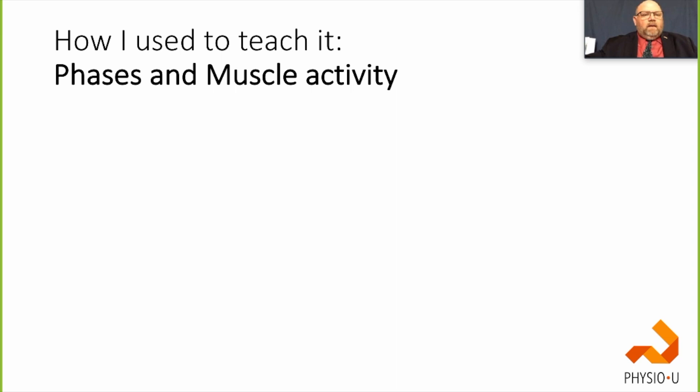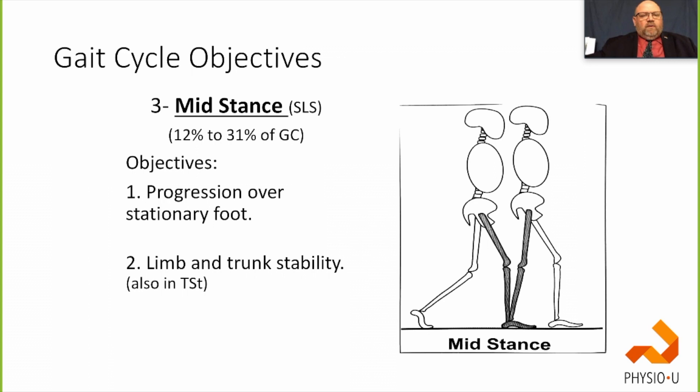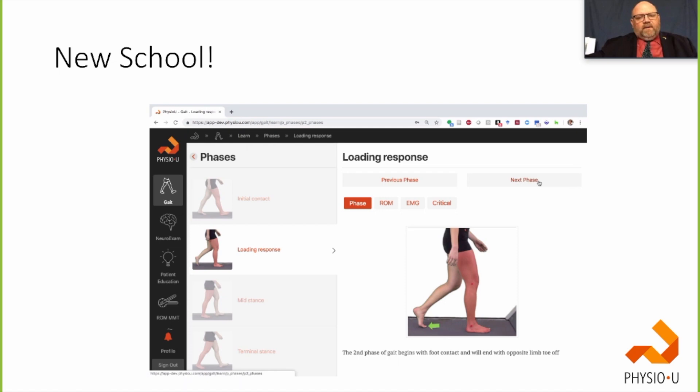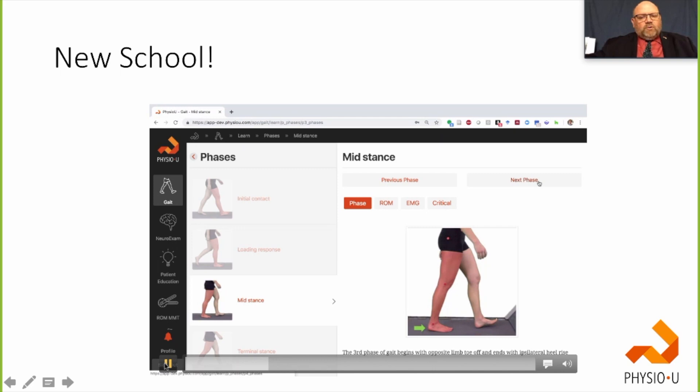Here's old school: two-dimensional, black and white — here you go, memorize it all. But now instead, in the app we have the different phases, the range of motion, the EMG, and the critical events. When we built the gait app, I was already thinking forward. We have a problem in ortho talking about why people have low back pain — it's really hard to describe what a normal and abnormal forward bend or return from bend looks like.